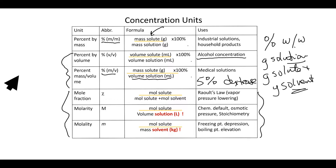There are units we use when looking at properties of solutions. For vapor pressure lowering, we need mole fraction. Mole fraction is unitless and is simply moles of solute divided by moles of solute plus moles of solvent. Molarity — which we know — is moles of solute over the volume of the entire solution in liters.